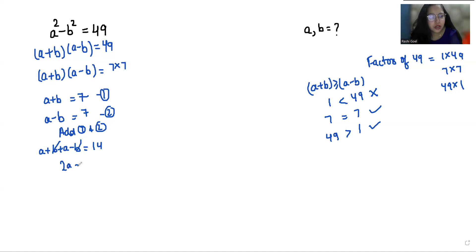So 2a = 14, which means a = 14÷2 = 7. Now, a+b = 7, and if a = 7, then b = 0.